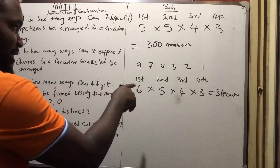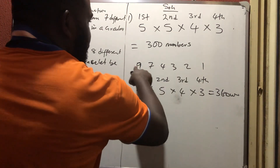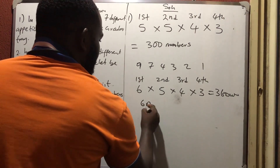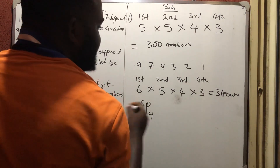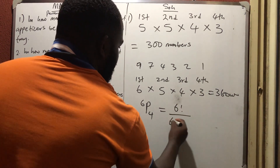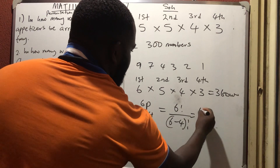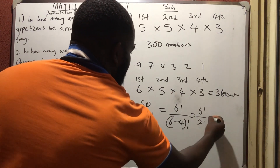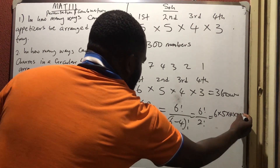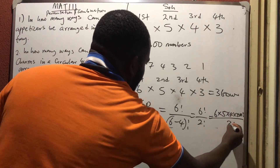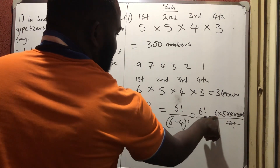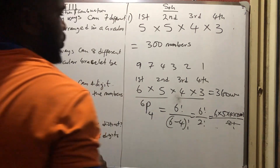Another way to get this, when all digits can work, is using the permutation formula: 6P4 = 6! / (6-4)! = 6! / 2! = (6×5×4×3×2!) / 2! = 6×5×4×3 = 360. This confirms the same answer.